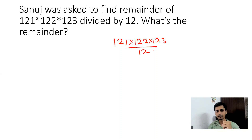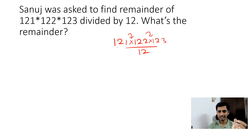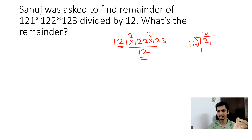Usually when we see this kind of question, we try to multiply everything and divide by 12, but that may consume much time. When you have numbers in multiplication in the numerator, there's a shortcut: you can divide each number by 12 individually. When you divide 121 by 12, you get 10 × 12 = 120, so the remainder is 1.